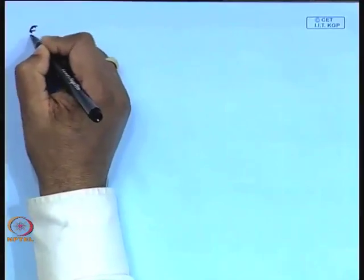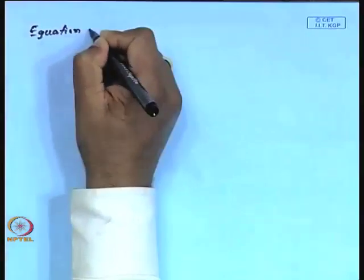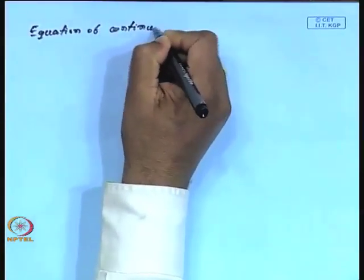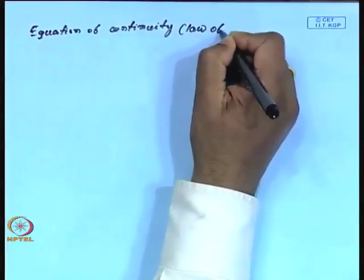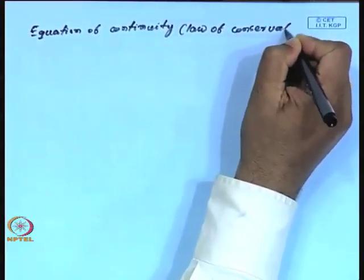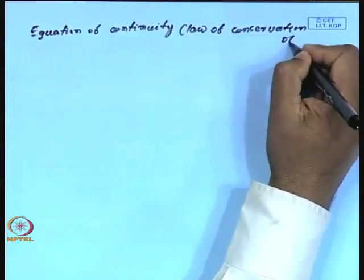Now, with this background, yesterday I talked about how to convert using the Gauss divergence theorem — we can always change a surface integral to a volume integral. This theorem, the Gauss divergence theorem, will help us in deriving the equation of continuity. The physical significance of the equation of continuity is the law of conservation of mass.